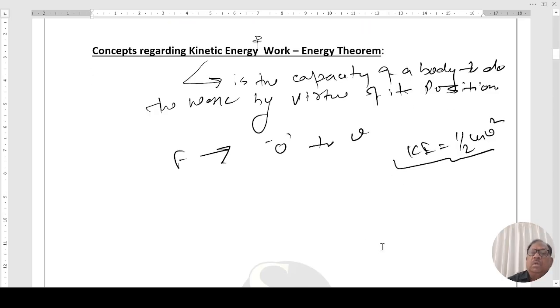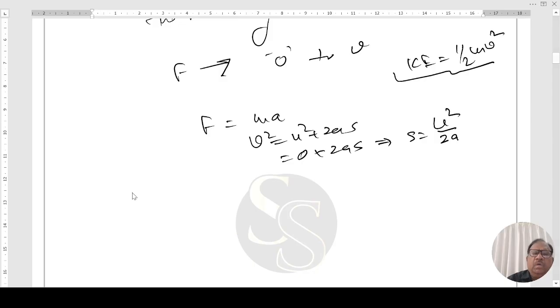Kinetic energy will be equal to half mv square. You know force equal to m into a. v square equal to v₀ square plus twice a s. So 0 plus twice a s. So this comes out to be s equal to v square by 2a. Work done will be equal to f s, m into a into s. That is m into a into v square by 2a. This a cancels, that is half mv square.